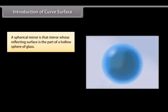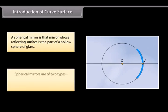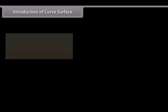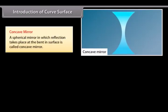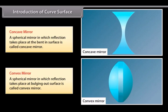A spherical mirror is a mirror whose reflecting surface is part of a hollow sphere of glass. Spherical mirrors are of two types: concave mirror and convex mirror. A spherical mirror in which reflection takes place at the bent-in surface is called a concave mirror. A spherical mirror in which reflection takes place at the bulging-out surface is called a convex mirror.